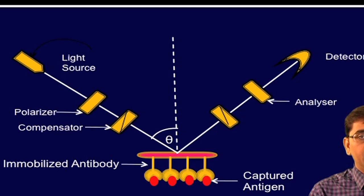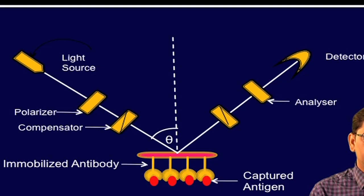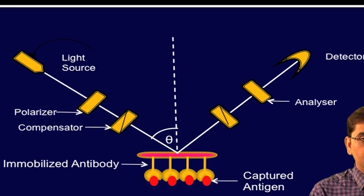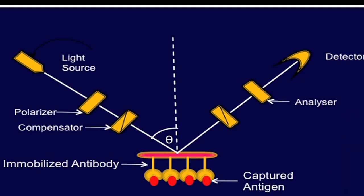A monochromatic laser light, linearly polarized by the polarizer is passed through a compensator to produce elliptically polarized light. This light is reflected from the sample surface and again becomes linearly polarized, which is detected by an analyzer filter and this reflected light intensity is monitored with a photo detector.